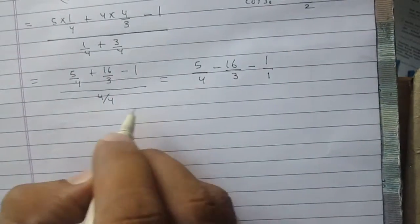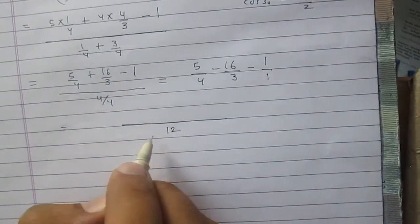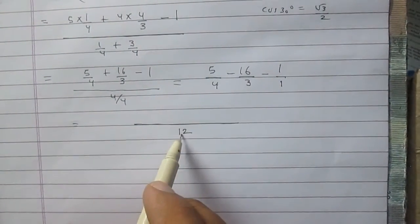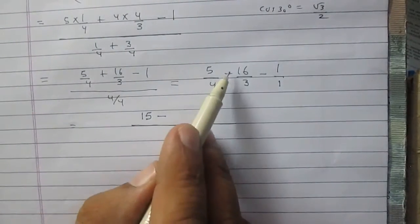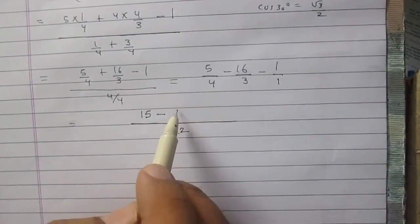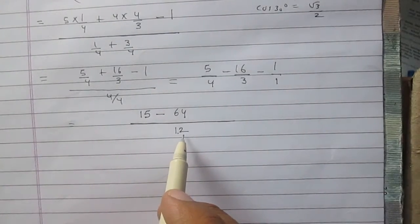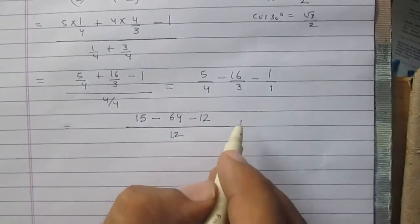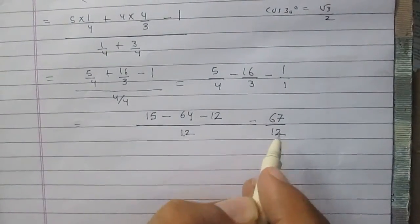So you can write it as 12 in the denominator. In the numerator you will have 3 multiplied to 5, which is 15, then negative sign. 3 times 4 is 12, so 4 will be multiplied to 16, giving 64. Then 1 times 12 is 12, so 12 will be multiplied to minus 1, which is minus 12. On simplifying, you will get 67 in the numerator and 12 in the denominator. So the answer is 67 divided by 12.